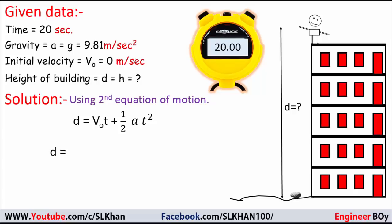Like d which is the height of the building equals v₀ which is zero times t which is 20 seconds, plus one half times a which is minus 9.81 meters per second squared. I'm putting minus here because the stone is falling in the negative y direction.